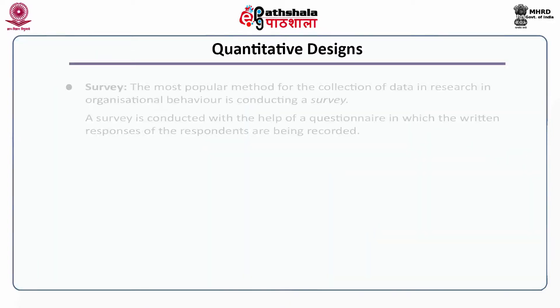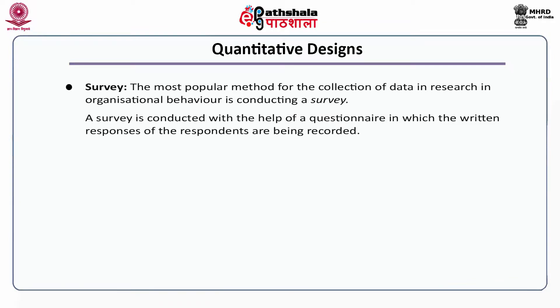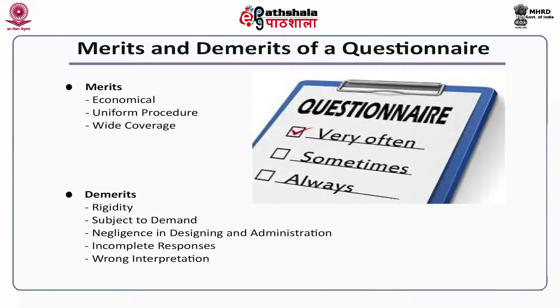The second type of quantitative research design is survey. The most popular method for data collection in organizational behavior research is conducting a survey. A survey is conducted with the help of a questionnaire in which the written responses of the respondents are recorded. The merits of a questionnaire: Number one, economical — it is the most economical way of getting written responses from a large group of individuals.